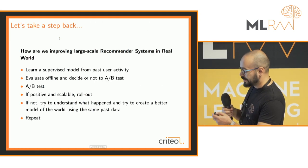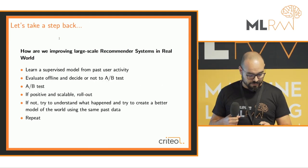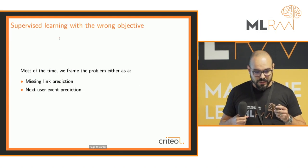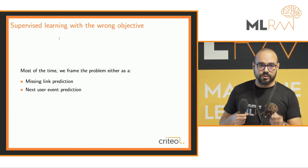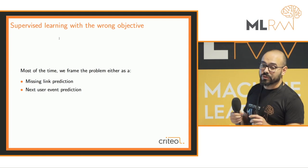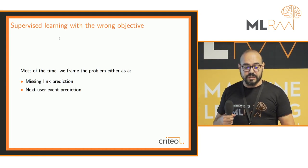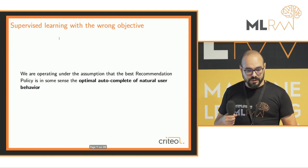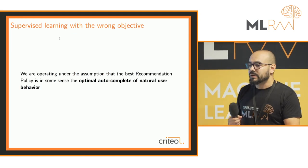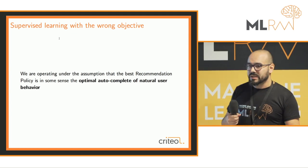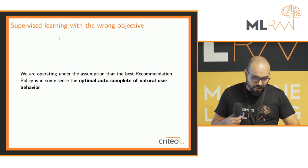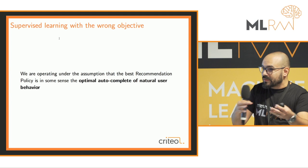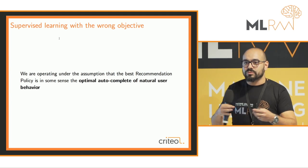Furthermore, not only do we use the wrong tool — the supervised learning framework — we also use the wrong objective. We say it's either missing link prediction or next user event prediction. But what we really want to do is remove some form of friction. We are trying to do optimal autocomplete of natural user behavior: the user will do this by himself and we just try to save him a click, basically.